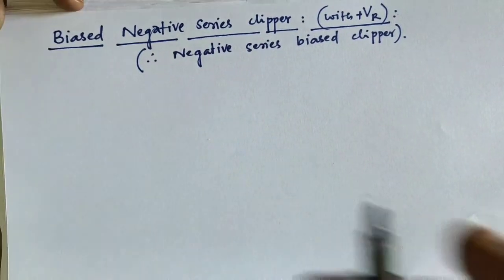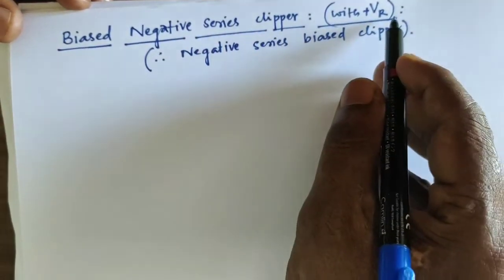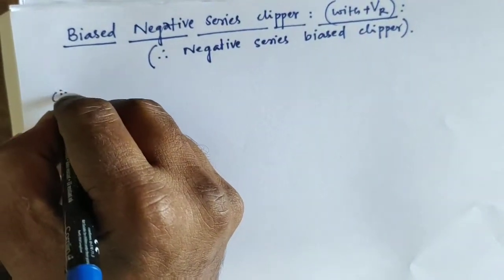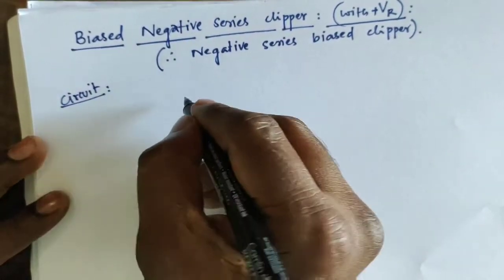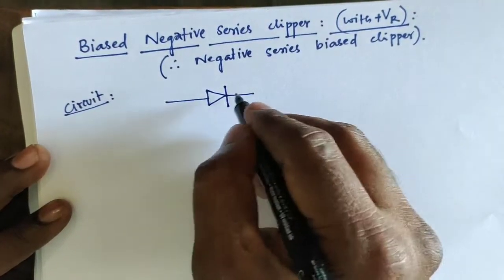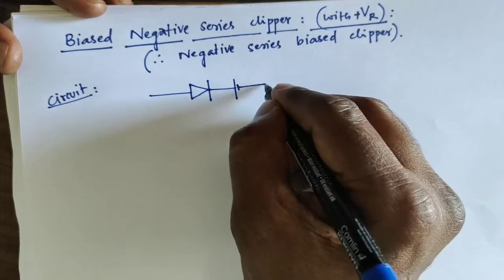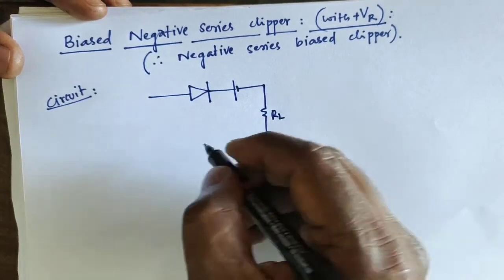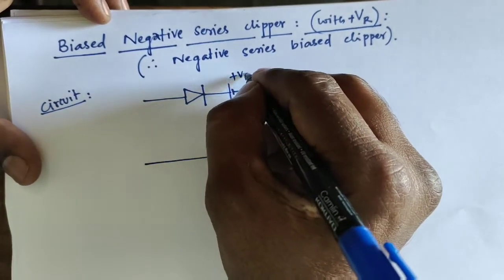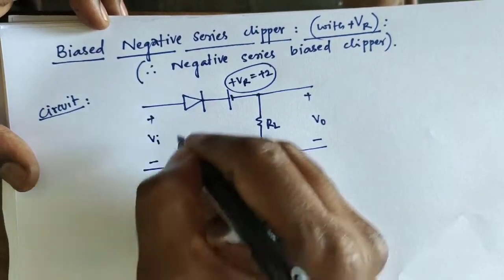We are going to discuss one more concept: the biased clipper. Specifically, the biased negative series clipper with positive reference, also called the negative series biased clipper. This is the circuit diagram for this. The diode is oriented in the clockwise direction for the actual negative series configuration. We are using a positive reference, and at the output stage we are using a load resistor RL. The output value is V0, and the reference voltage is plus Vr, for example plus 2 volts. The input value applied is Vi.